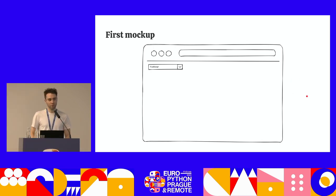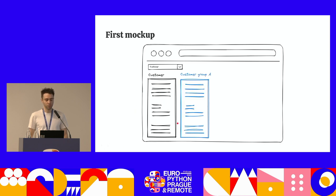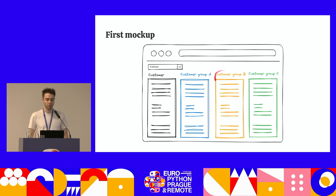To build this dashboard, we first went with a first mockup. This mockup worked like this: first you had a customer selector, so you would select customer 1, customer 2, customer whatever, and then you would have KPIs about this customer. You would also have another column with the same KPIs aligned, but this time for a customer group related to the first customer. So the data was aggregated at a group level, and then you would have other columns with other groups of customers related to this one.